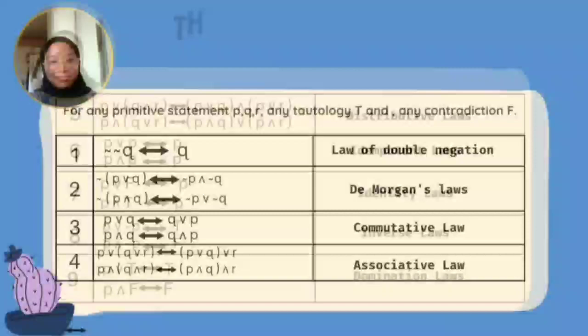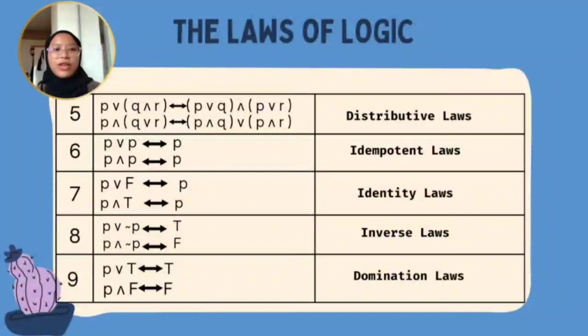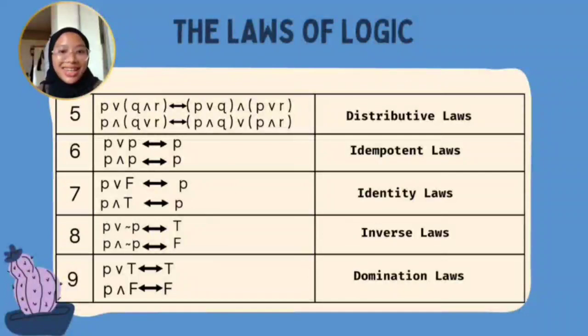The next law is the Distributive Law, which expands a statement into a bigger statement. For example, P and bracket Q or R becomes P and Q or P and R.